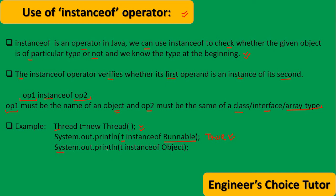And the second line. System.out.println(t instanceof Object). t is thread type. T is thread type object. t is the instance of object or not? True. It also returns true.